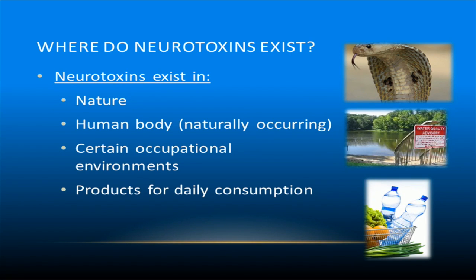Neurotoxins exist everywhere within both natural and man-made environments. They can exist naturally in the environment, within the human body, within certain occupational environments, and even in the products which we use on a daily basis. For example, many of the venoms and other toxins that organisms use in defense against predators are neurotoxins. The venom of bees, scorpions, spiders, and snakes can contain many different toxins. Plastic products and household items can also contain many different toxic constituents. In order to protect ourselves against these neurotoxic chemicals, it is important to understand how they behave and where they come from.